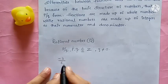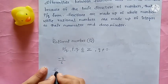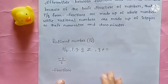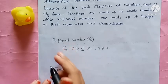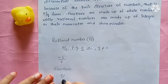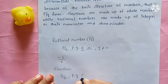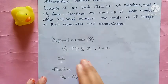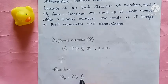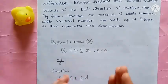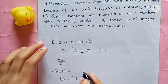Now let's learn about fractions. Fractions are also in the form of P by Q, but in fractions P and Q belong to W — meaning whole numbers. So the main difference is: rational numbers use integers (Z), while fractions use whole numbers (W).